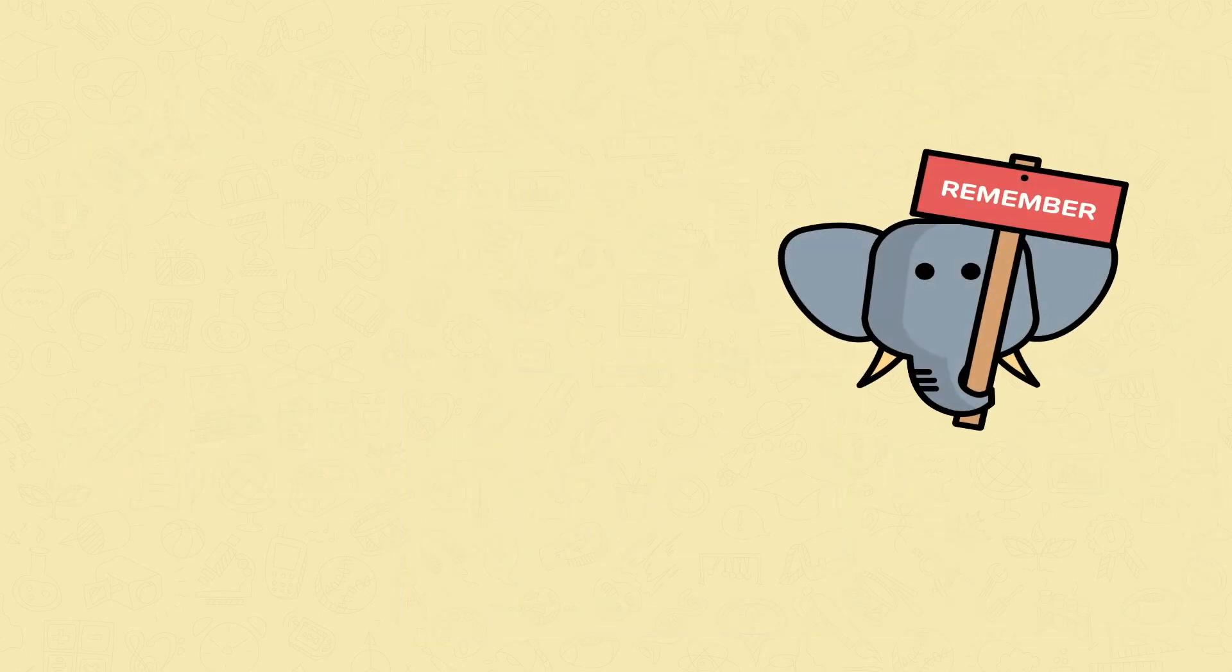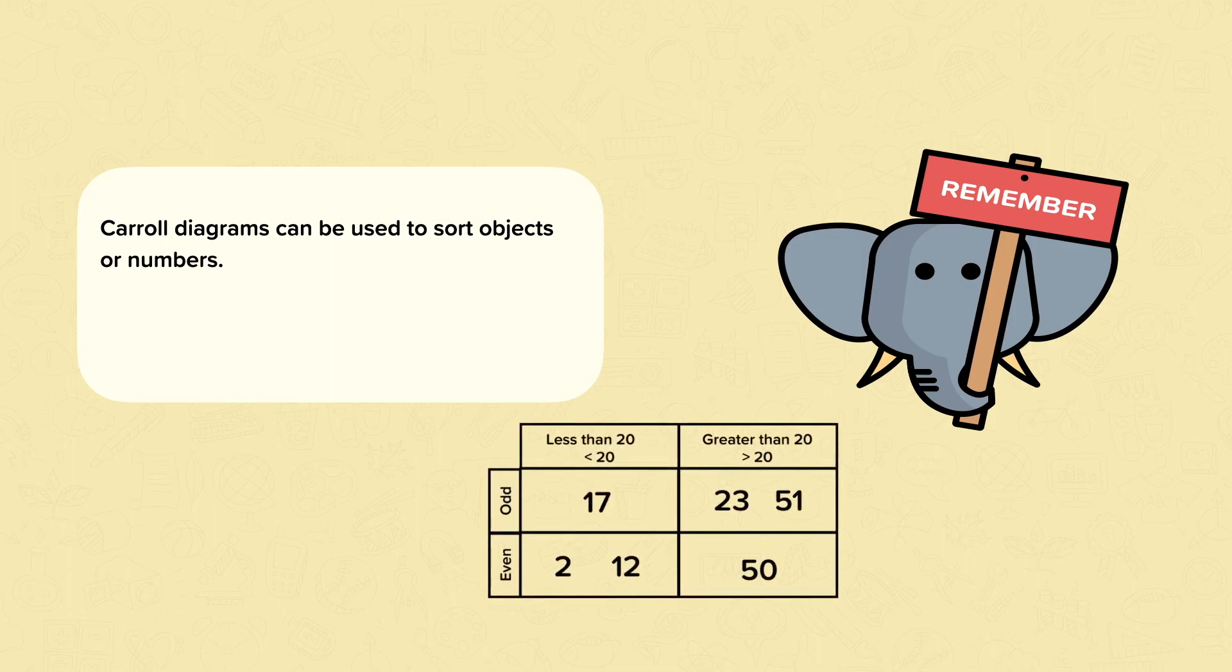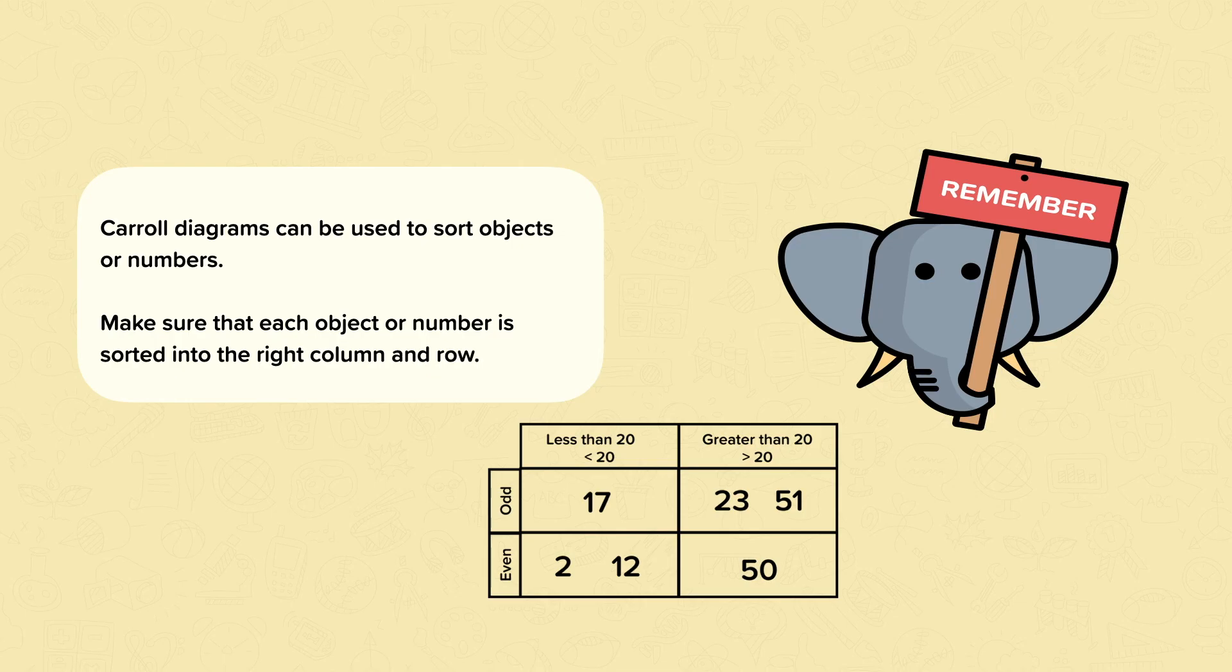So remember, Carroll diagrams can be used to sort objects or numbers. Make sure that each object or number is sorted into the right column and row. Remember, columns go down and rows go across.